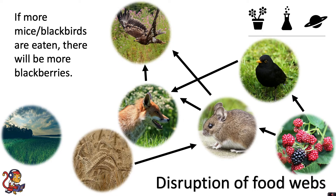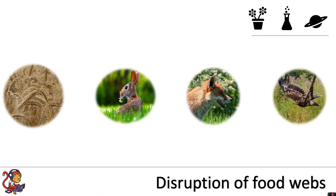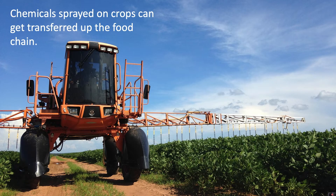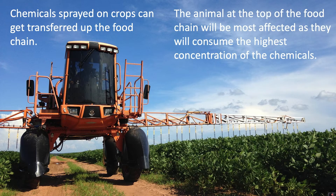Animals will switch their food sources and change their diet and the organisms that they are eating. Now we're going to look at another way that food webs can be disrupted — by looking at a particular food chain where we've got wheat, then the rabbit, the fox, and the eagle. We're going to look at how chemicals can be passed along a food chain. Chemicals are sprayed on crops and get transferred up the food chain, and the animal at the top will be most affected as it will consume the highest concentration of the chemicals.